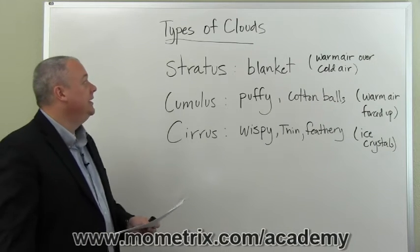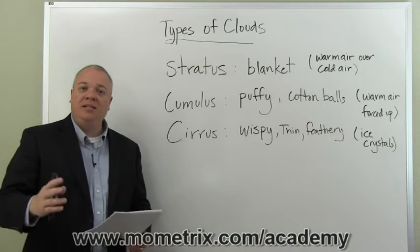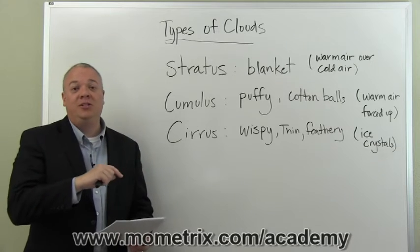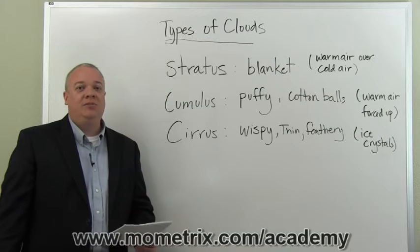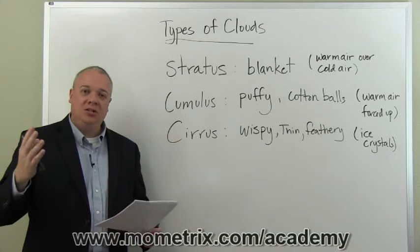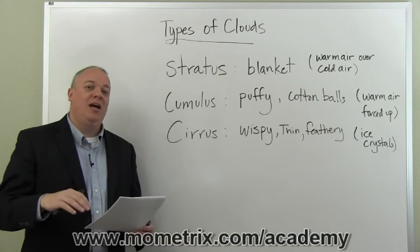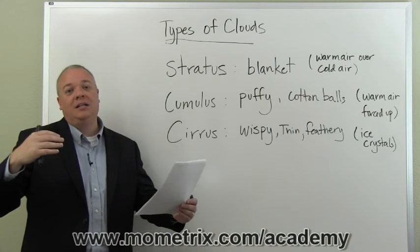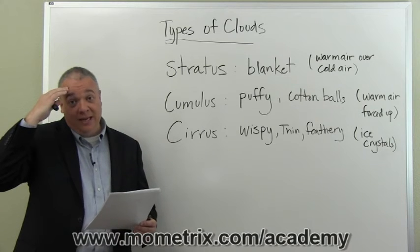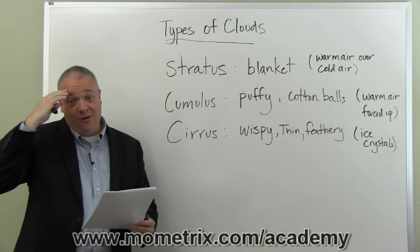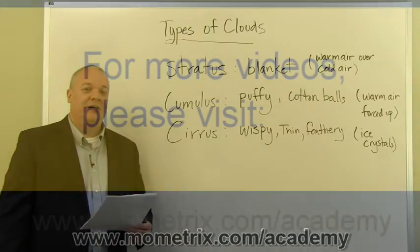So: stratus — blanket; cumulus — puffy cotton balls; cirrus — wispy, thin, feathery. These are the basic types of clouds that you see. I hope you'll take some time not only to learn this information but to actually go outside and look up. We get so busy living our lives, we look everywhere but up. Look up, look at the clouds, especially at sunrise or sunset for the different light and colors. And as you're looking, hopefully you'll remember blanket, puffy cotton balls, or thin wispy and feathery, and go — oh, I know what that is: stratus, cumulus, or cirrus.